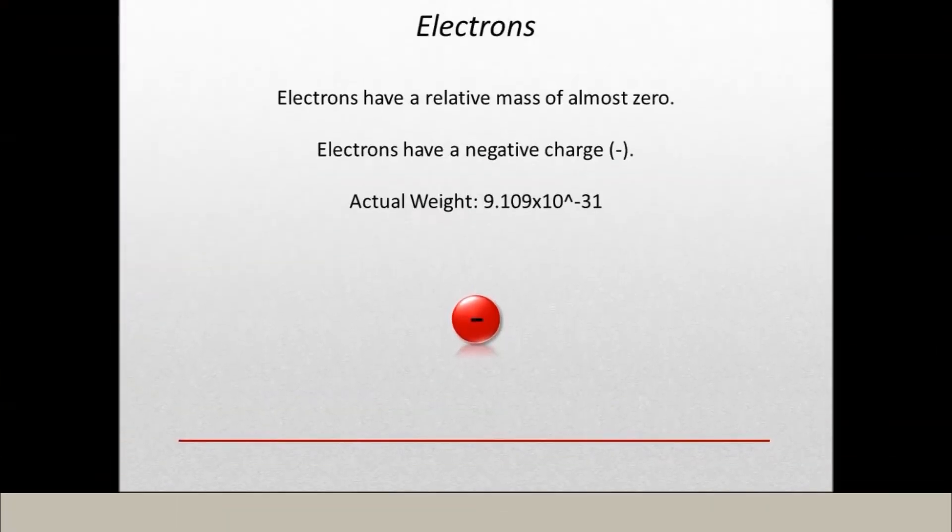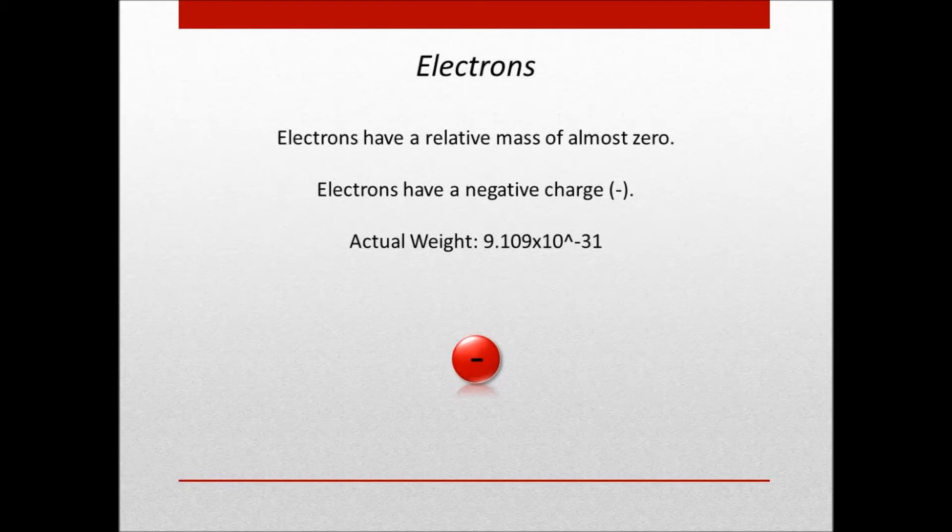Now for an electron. An electron has a relative mass of almost zero. A small fact for you: if a nucleus was the size of a football, the nearest electron would be almost half a mile away at 0.8 kilometers.